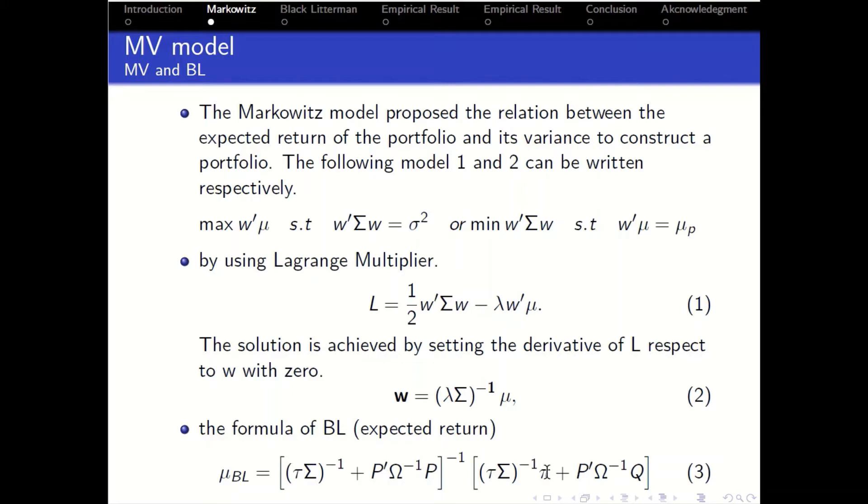How to derive the formula of Black Litterman model can be seen in Idzorek, Satchell, Cheung, and Walters and many others about the Black Litterman model. So this is about the new mean as input to get the optimal weight as output.